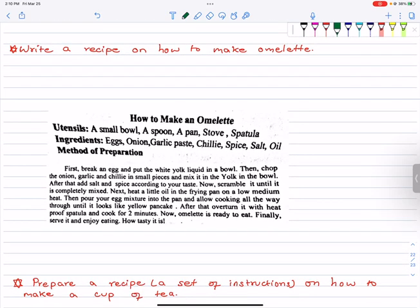Write a recipe on how to make omelette. Do you guys know how to make an omelette? Let's see. How to make an omelette? Utensils: a small bowl, a spoon, a pan, stove, spatula. Spatula means that spoon. Ingredients: eggs, onion, garlic paste, chili, spice, salt and oil.